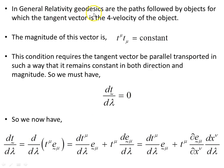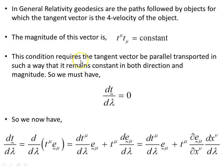In general relativity, geodesics are the paths followed by objects for which the tangent vector is the four-velocity of the object. The magnitude of this four-velocity is a constant — the scalar product gives a constant, so the magnitude is not varying. This condition requires the tangent vector to be parallel transported such that it remains constant in both direction and magnitude, so the intrinsic derivative of the tangent vector with respect to lambda must equal zero.